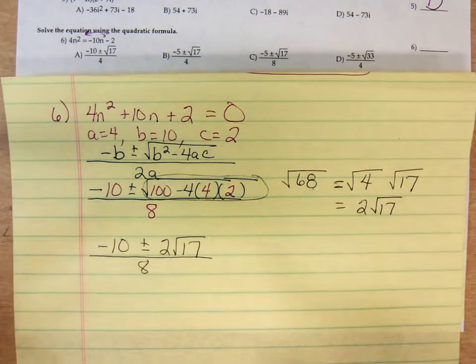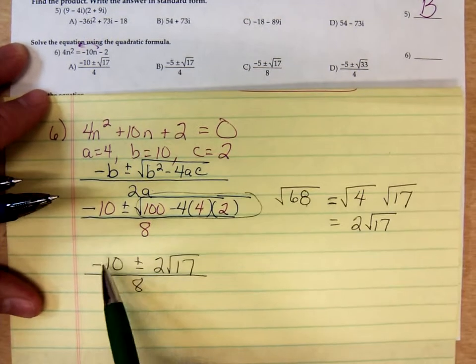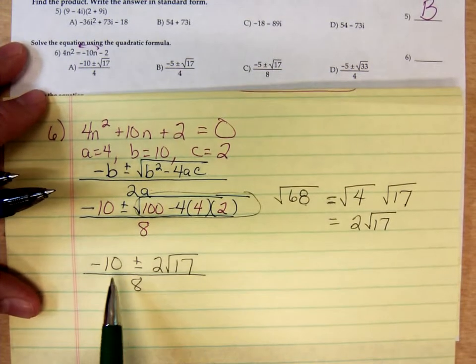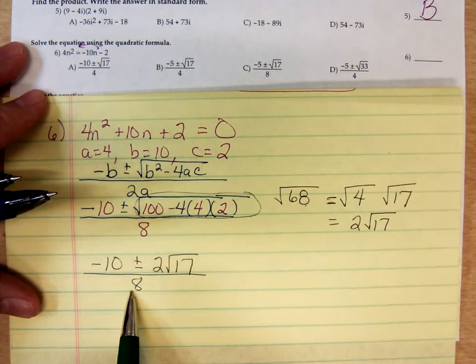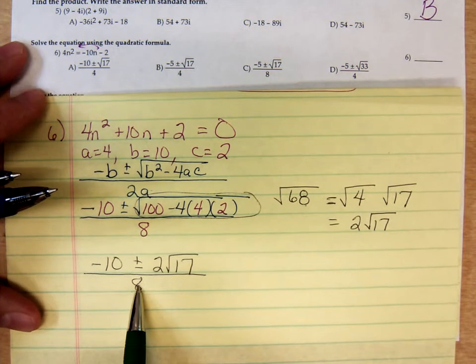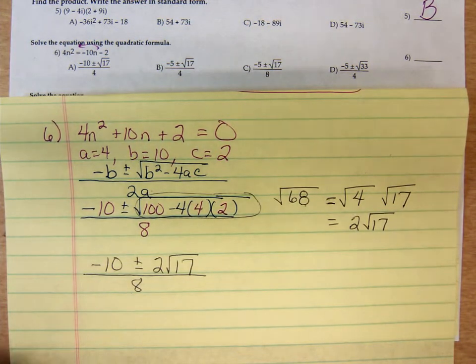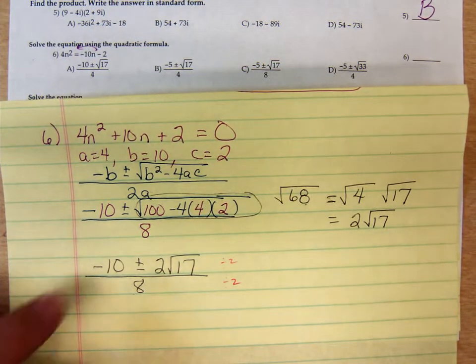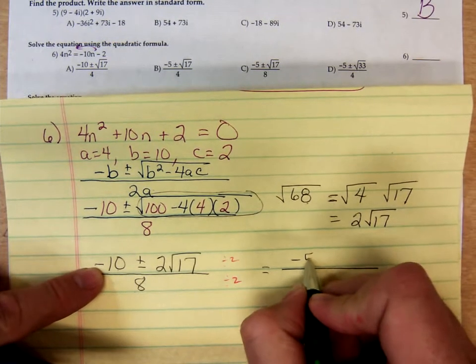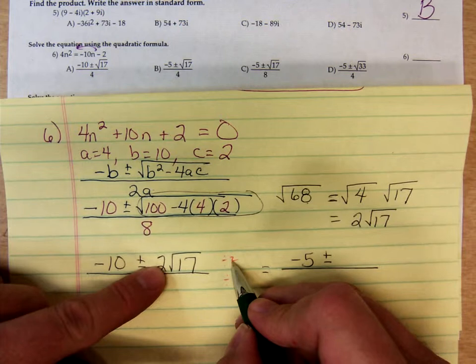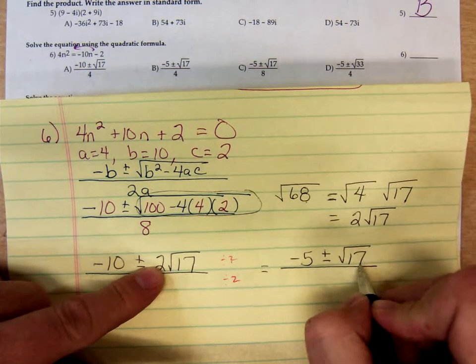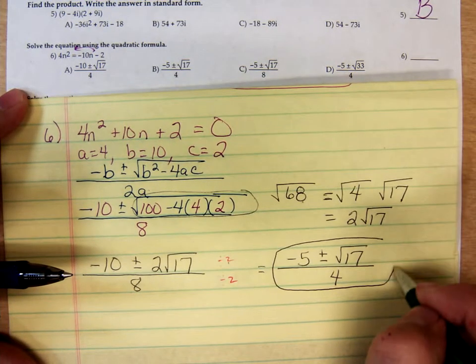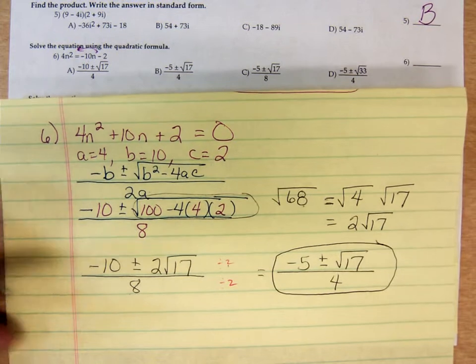All over 8. And to simplify this, if I want just one big fraction, I could separate it, but then my answer is not going to look the same as what I have here. What I'll do is look at the three numbers that are not under the square root. 10, 2, and 8. What can I divide all of those by? Well, a 2. If I divide above and below by 2. Negative 10 over 2 would be negative 5. The 2 over 2 would be 1. So just square root of 17. 8 over 2 is 4. That's problem 6.